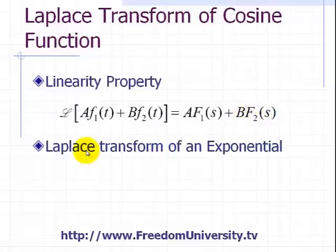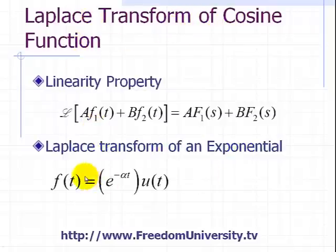And the other property you need in finding the Laplace transform of a cosine function is the Laplace transform of an exponential, where we define our exponential as f(t) equal to e to the minus alpha t u(t). And the Laplace transform is 1 over s plus alpha.